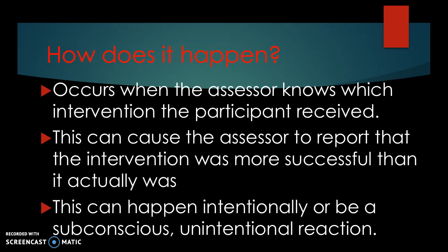This occurs when the assessor, which is the person measuring the dependent variable, knows which intervention the participant received. If the assessor has knowledge of which participants received the intervention and which didn't, the assessor may, intentionally or unintentionally, report that those given the intervention have had the desired outcome, or that they have experienced a larger benefit from the intervention than those who were given the placebo.